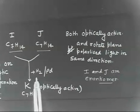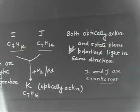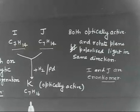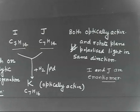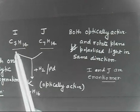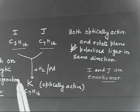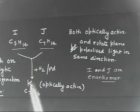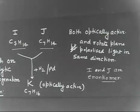I and J both react with one mole of hydrogen — that is hydrogenation. Catalytic hydrogenation gives a compound C7H16, and this compound is again optically active. So adding one mole of hydrogen to either I or J gives the same compound K. So in both cases, hydrogenation leads to compound K.